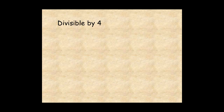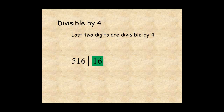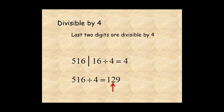A number is divisible by 4 if the number formed by the last two digits is divisible by 4. For example, the number 516: the number formed by the last two digits is 16, which is divisible by 4. So the number 516 is divisible by 4. And you can see, 516 divided by 4 is 129 with no remainder.